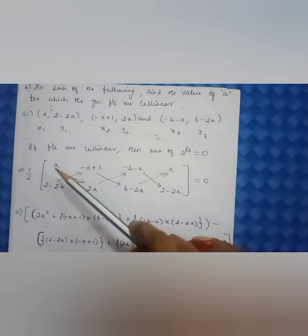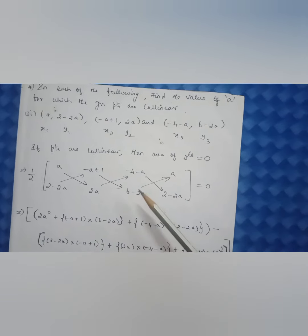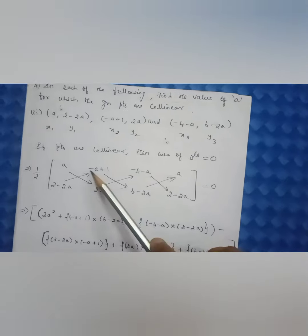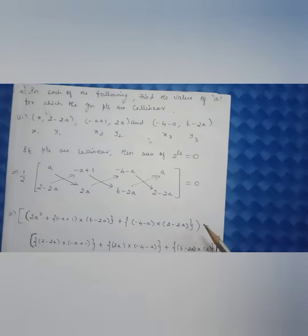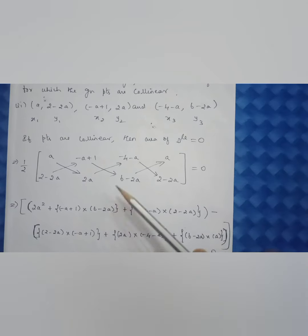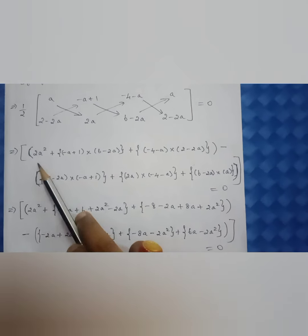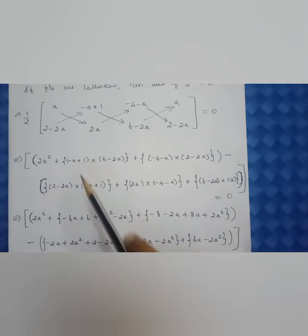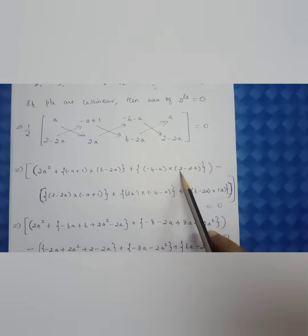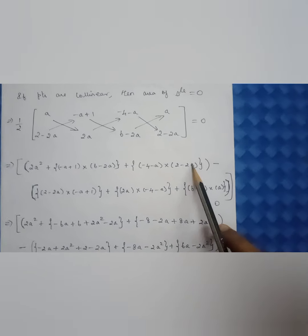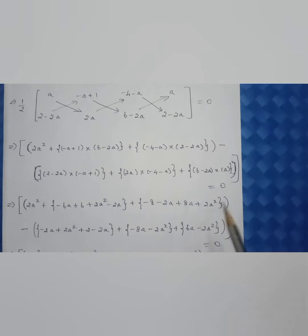So: a × 2a = 2a², then (−a+1) × (6−2a), kept in a separate bracket because of the negative sign, then (−4−a) × (2−2a). That completes the first part. Minus the second part: (2−2a) × (−a+1), (2a) × (−4−a), (6−2a) × a. Expanding: 2a², then 6×(−a) = −6a, 6×1 = 6, (−2a)×(−1) = +2a², (−1)×(2) = −2a, then 2×(−4) = −8, 2×(−a) = −2a, (−1)×(−2a) = +2a, (−1)×2a becomes −2a × (−1), giving 8a, then 2a × a = 2a² and +2a².